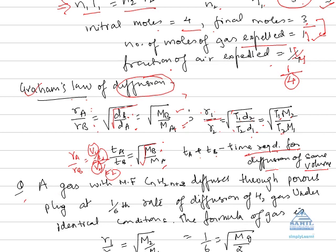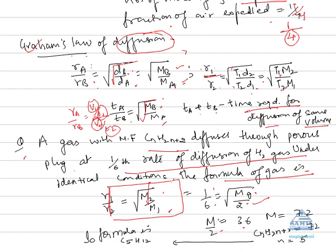Now suppose we take an example like if we have a gas CnH2n plus 2 it diffuses through the porous plug at 1 by 6 the rate of diffusion of hydrogen gas. Now under identical conditions, if we find out the molecular formula of the gas, how can we find it? By using the relation R1 by R2 is equal to under root of M2 by M1. So since the rate of diffusion is given like 1 by 6 is equal to under root of Mg over 2. 2 is the molar mass of hydrogen gas. So M by 2 is equal to 36 that comes out to be 72.